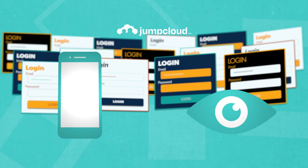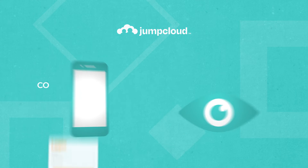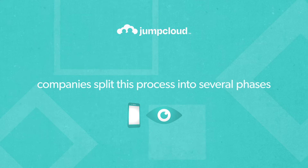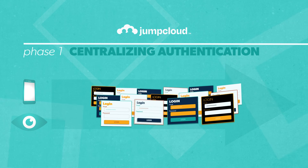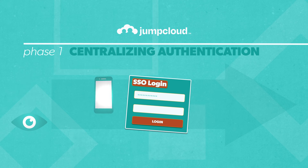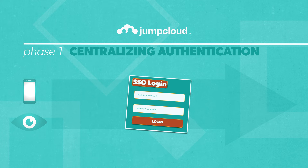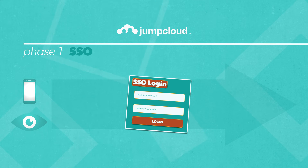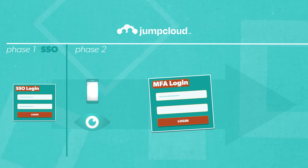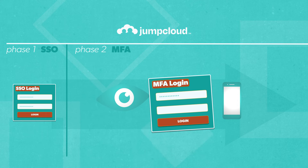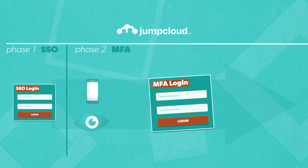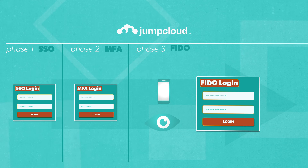And that's a lot of work. To make implementation less daunting, companies split this process into several phases. The first is centralizing authentication — consolidating logins decreases the number of passwords users need to remember. A good example of this is single sign-on, or SSO. Next, you enforce multi-factor authentication, or MFA, where users must verify multiple factors before being granted access to an application. Once those two phases are complete, companies can implement a FIDO login structure and scale it across the business.